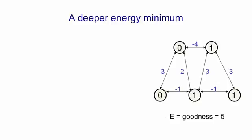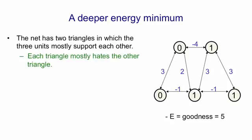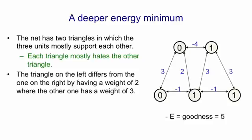However the minimum it settled to is not the deepest energy minimum. It's just one of two minima that this net has. The deepest energy minimum is shown on the right here and it's when the other triangle of units that support each other is on. That has a goodness of three plus three plus minus one is five so that's a slightly better energy minimum. If you look at that net you can see the net's composed of these two triangles in which the units mostly support each other, although there's a bit of disagreement at the bottom. Each of those triangles mostly hates the other triangle via that connection at the top. The triangle on the left differs from the one on the right by having a weight of two where the other one has a weight of three. So the triangle on the right will give you the deepest minimum.